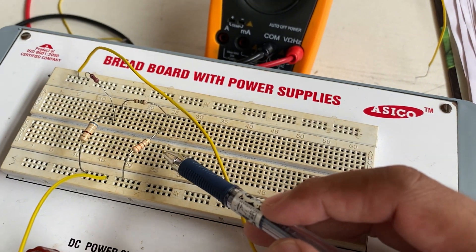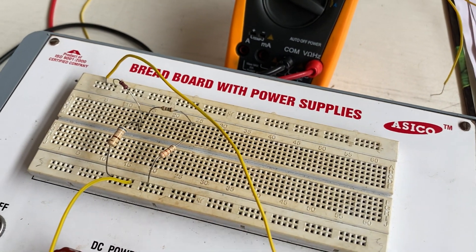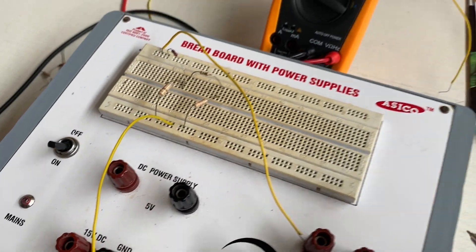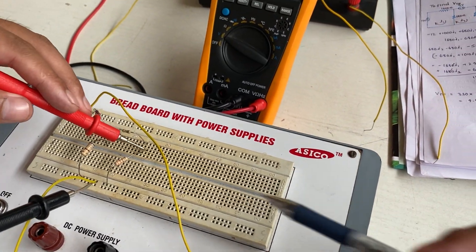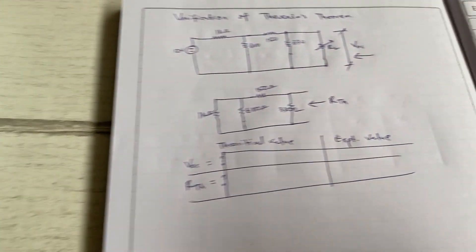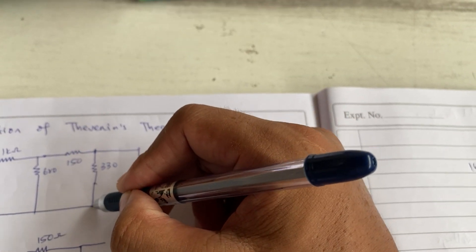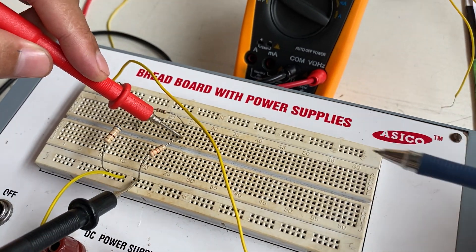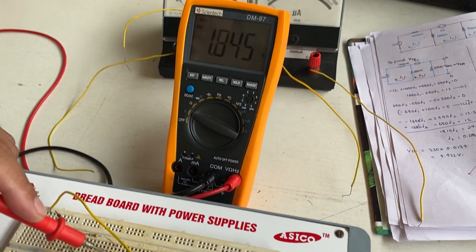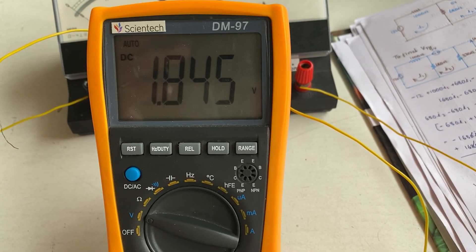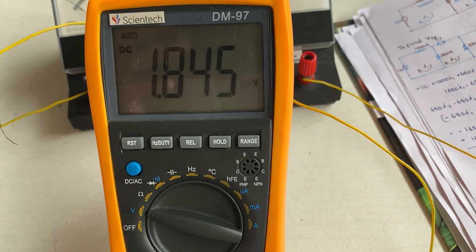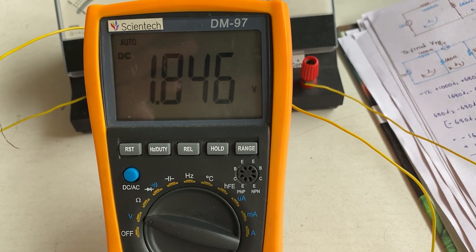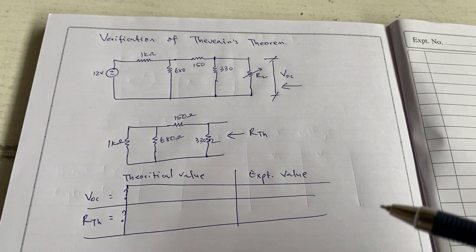Now to measure the VOC, we have turned on the supply. Measuring VOC is the same as measuring the voltage across the 330Ω terminal. We are measuring the voltage — the VOC — and here we have a voltage of 1.845 volts. This is the Thevenin voltage, or open circuit voltage, for the given circuit.